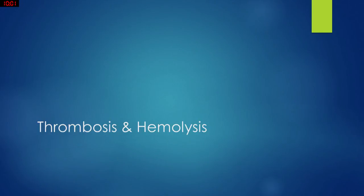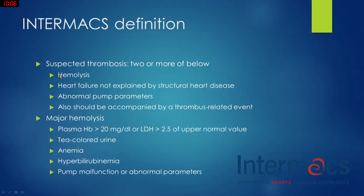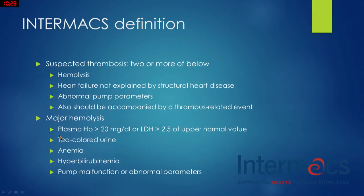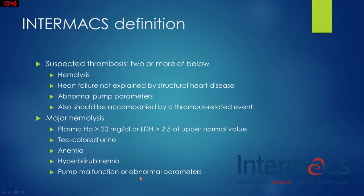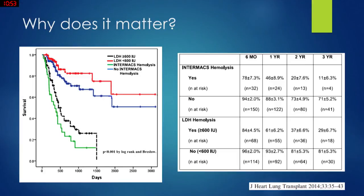For thrombosis and hemolysis, from the INTERMACS definition, a suspected thrombus requires two or more of the following: hemolysis, heart failure not explained by structural heart disease, abnormal pump parameters, and a thrombus-related event. For hemolysis, plasma hemoglobin and LDH levels are quite useful for diagnosis, along with urine color changes, unexplained anemia, hyperbilirubinemia, and abnormal pump parameters. Pump thrombosis is a significant factor affecting long-term outcomes.